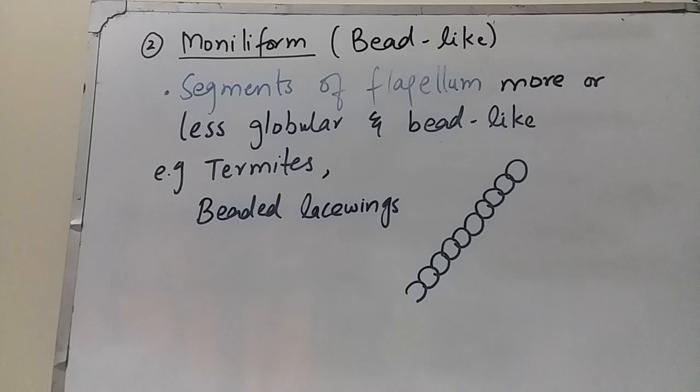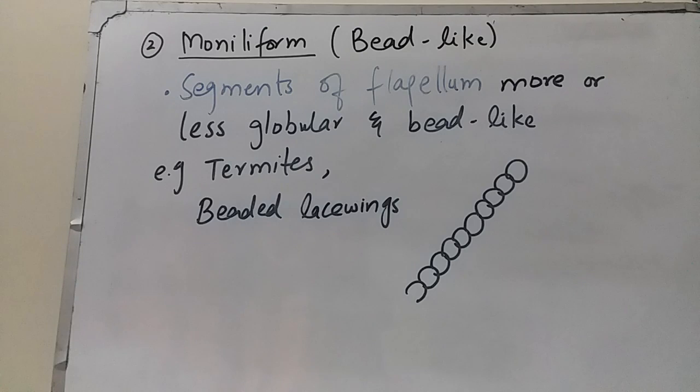The second type is moniliform antenna, which means a bead-like structure. In this case, the segments of the flagellum are more or less globular — rounded — giving a bead-like appearance. Moniliform antennae are found in termites, also known as white ants, and in beaded lacewings.